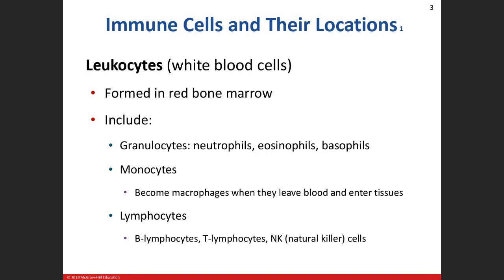We're going to review some of the stuff we've already talked about before. When we're talking about the immune cells — this is chapter 22 — we talked about the different types of cells located in the blood: leukocytes, also known as white blood cells.